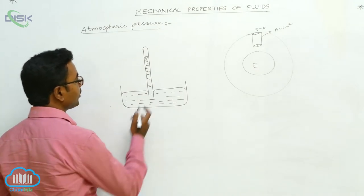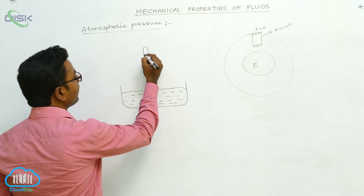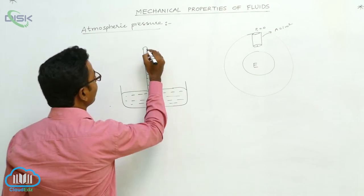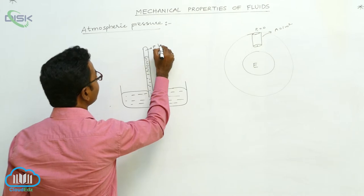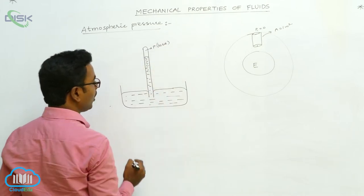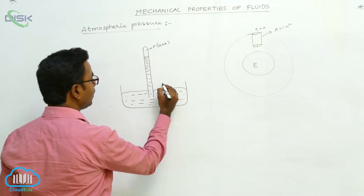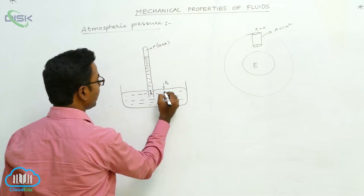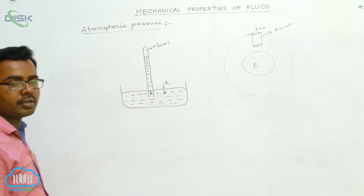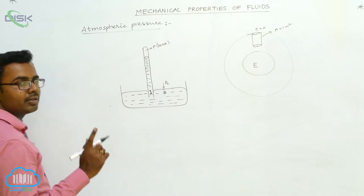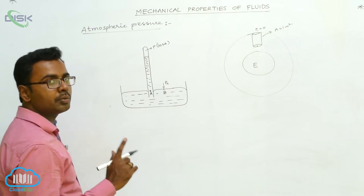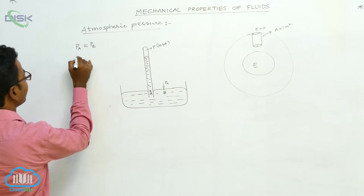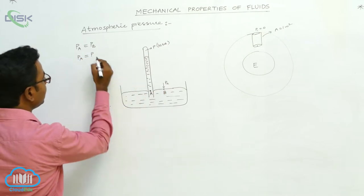Using this mercury barometer we find the atmospheric pressure. Inside the glass tube, above the mercury level, there are mercury vapors. These mercury vapors exert very little pressure — let it be P — and it is negligible. Atmospheric pressure is acting here; let it be PA. We consider two points: capital A and B, at the same horizontal level. According to Pascal's law, pressure at the same horizontal level is the same, so pressure at point A equals pressure at point B, which is PA.